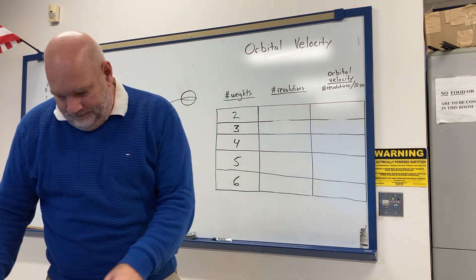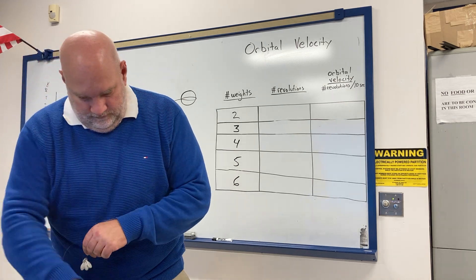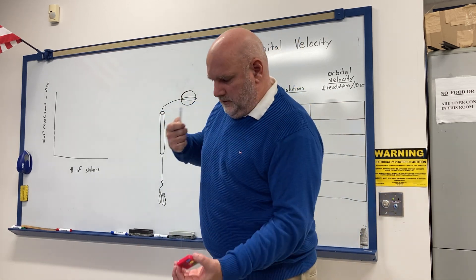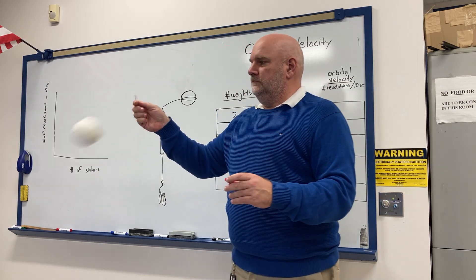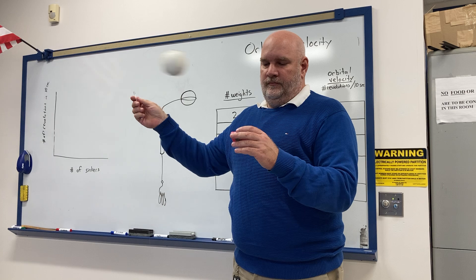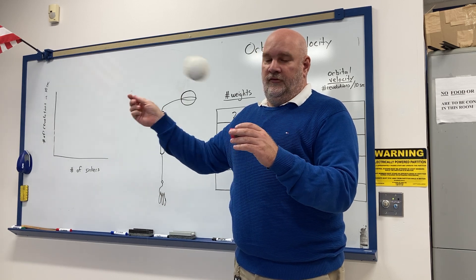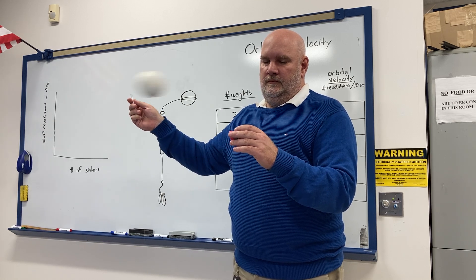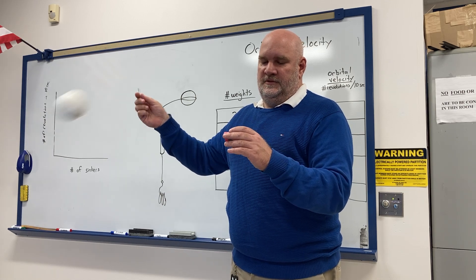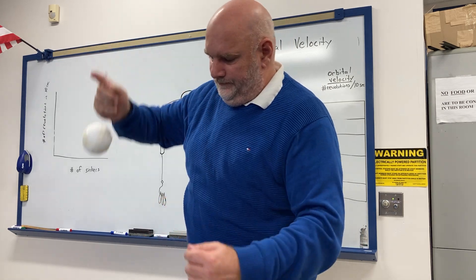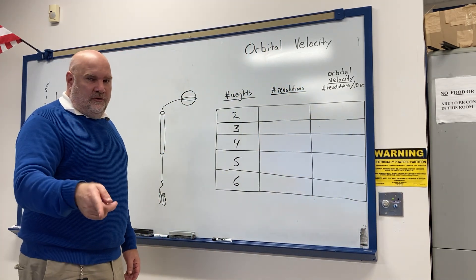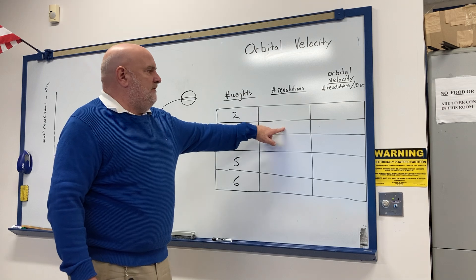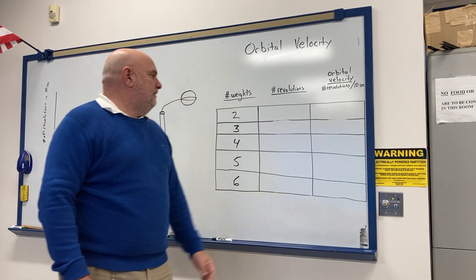Now we're going to do the same thing with three sinkers on the bottom. However many times you counted, that's your number of revolutions. Take that number and divide it by 10 to get the orbital velocity for this trial.